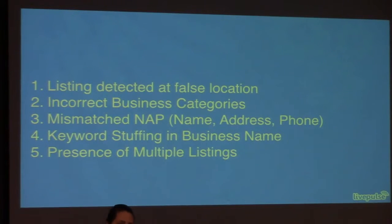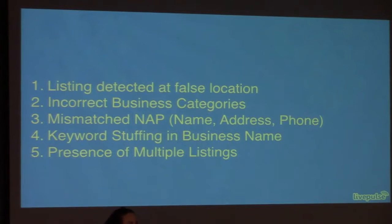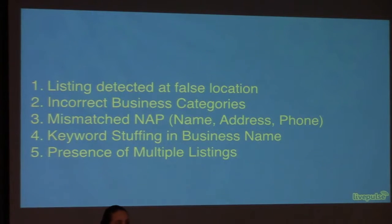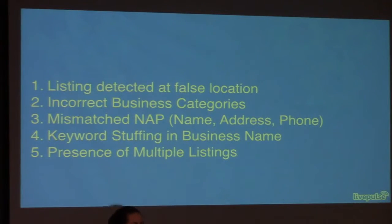And then there's the presence of multiple listings. I've had a lot of clients come to me and they've actually had four Google My Business listings. They say, 'I started to claim it, I didn't get the postcard, so I started over.' And it becomes a problem because Google looks at what's connected to their website and asks: who's real, who's not real? So you want to make sure that you clean that up first.